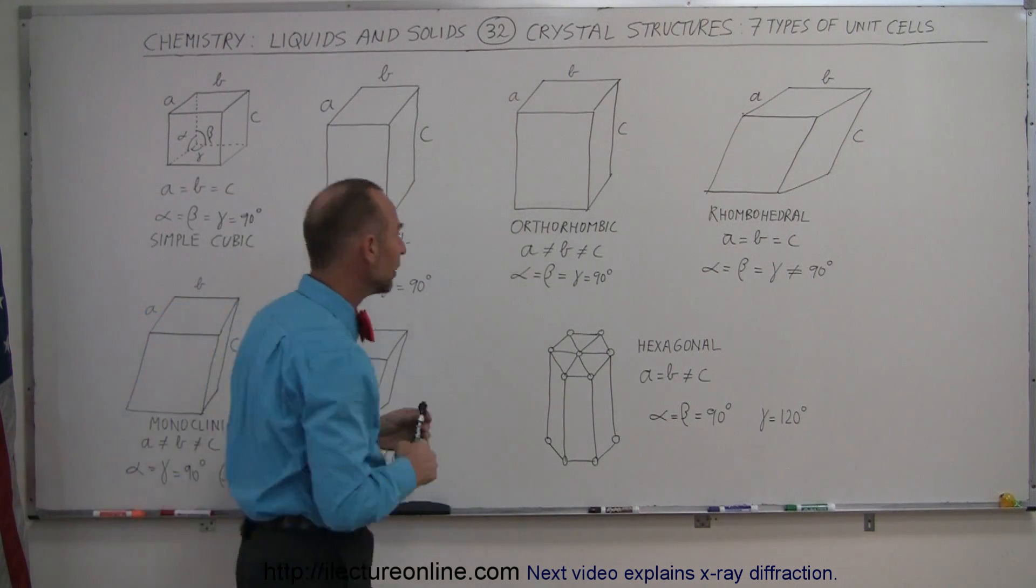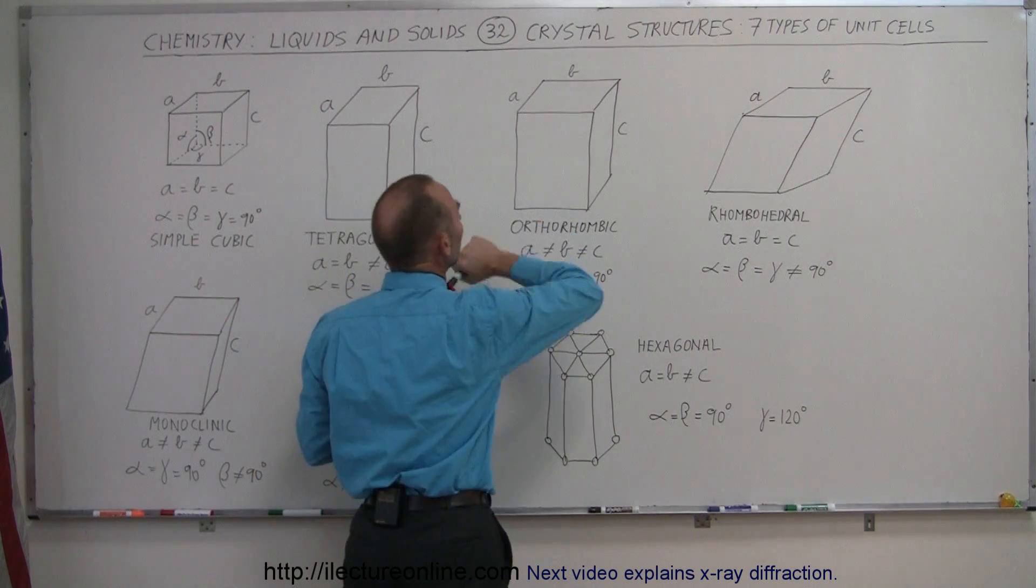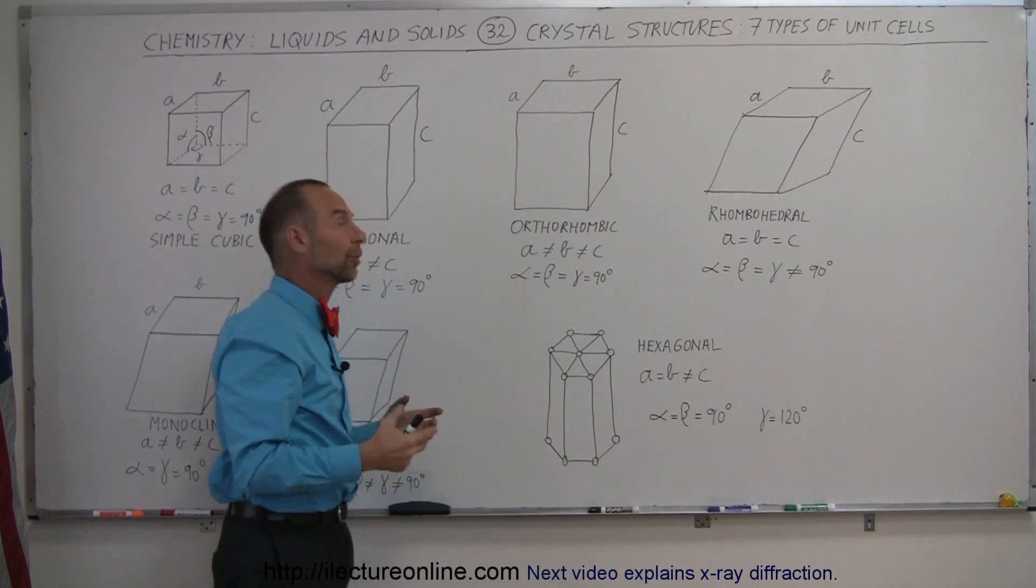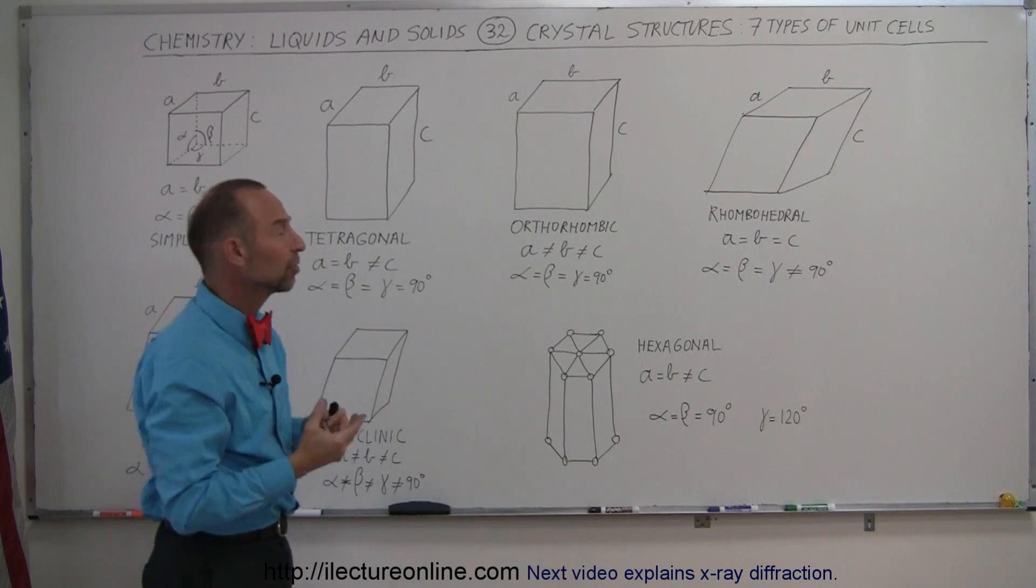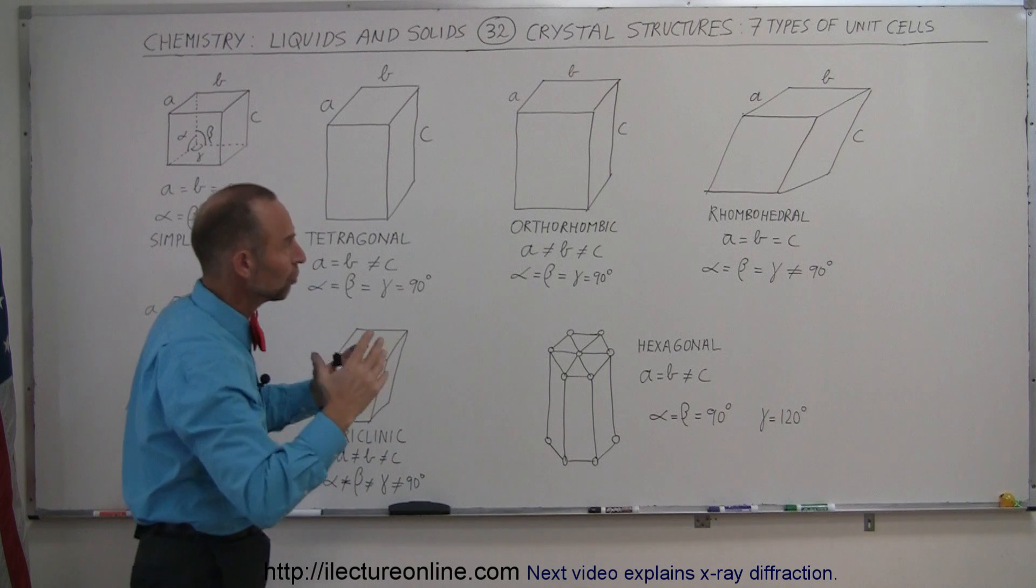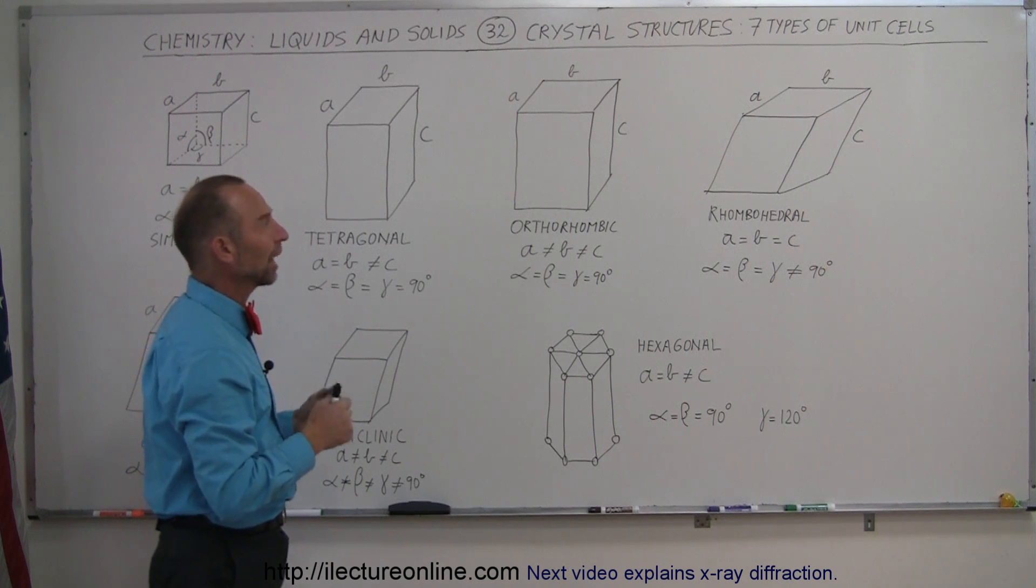Now we have orthorhombic, which is basically the same as tetragonal, except now A and B are no longer the same. A is not equal to B, and it's not equal to C. Therefore, we now have a basic cubic structure where the sides A, B, C are not equal to each other. We still have the same angles, 90 degree angles, so it's kind of like a box, a shoe box, where the dimensions in all three directions are not the same anymore.